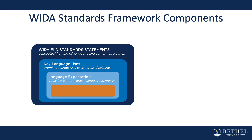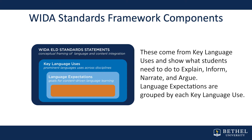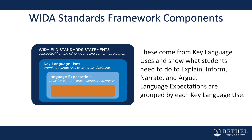The third level is language expectations, which come from key language uses and show what students need to do as they explain, inform, narrate, and argue. Language expectations are grouped by each key language use. The last level is proficiency level descriptors, which show a continuum of language development from levels one to six. The key component we will be working with in this course is language expectations.